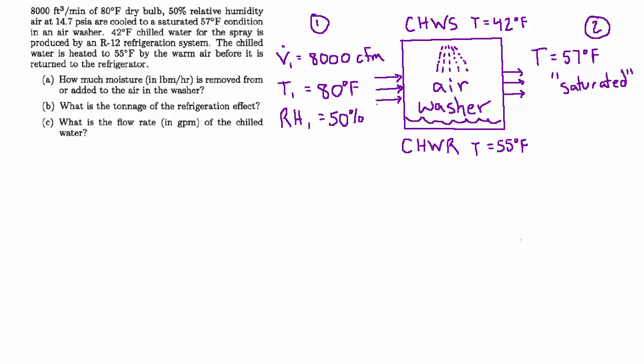Part A: How much moisture in pounds per hour is removed from or added to the air in the washer? Part B: What is the tonnage of the refrigeration effect? And Part C: What is the flow rate in GPM of the chilled water?